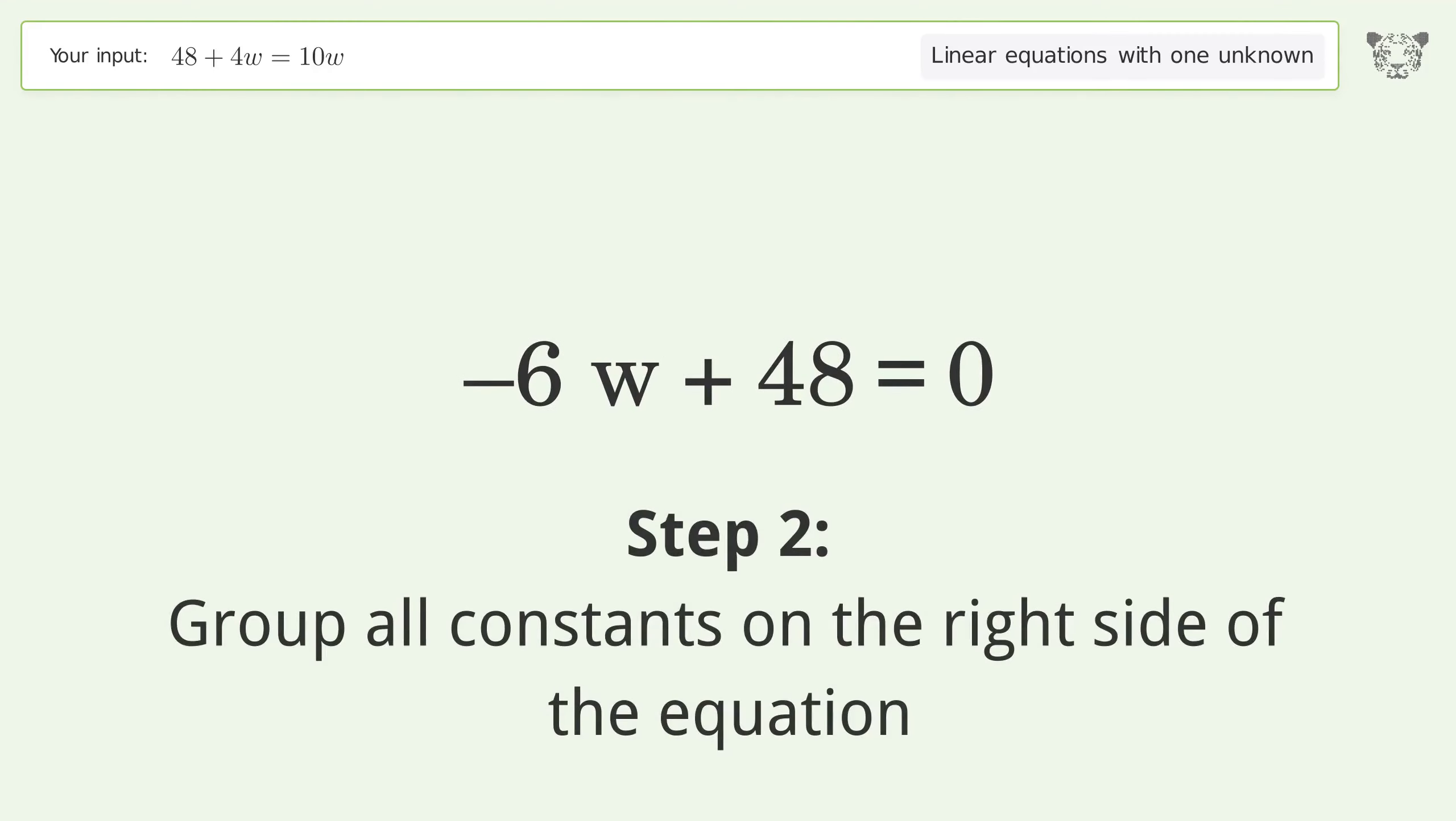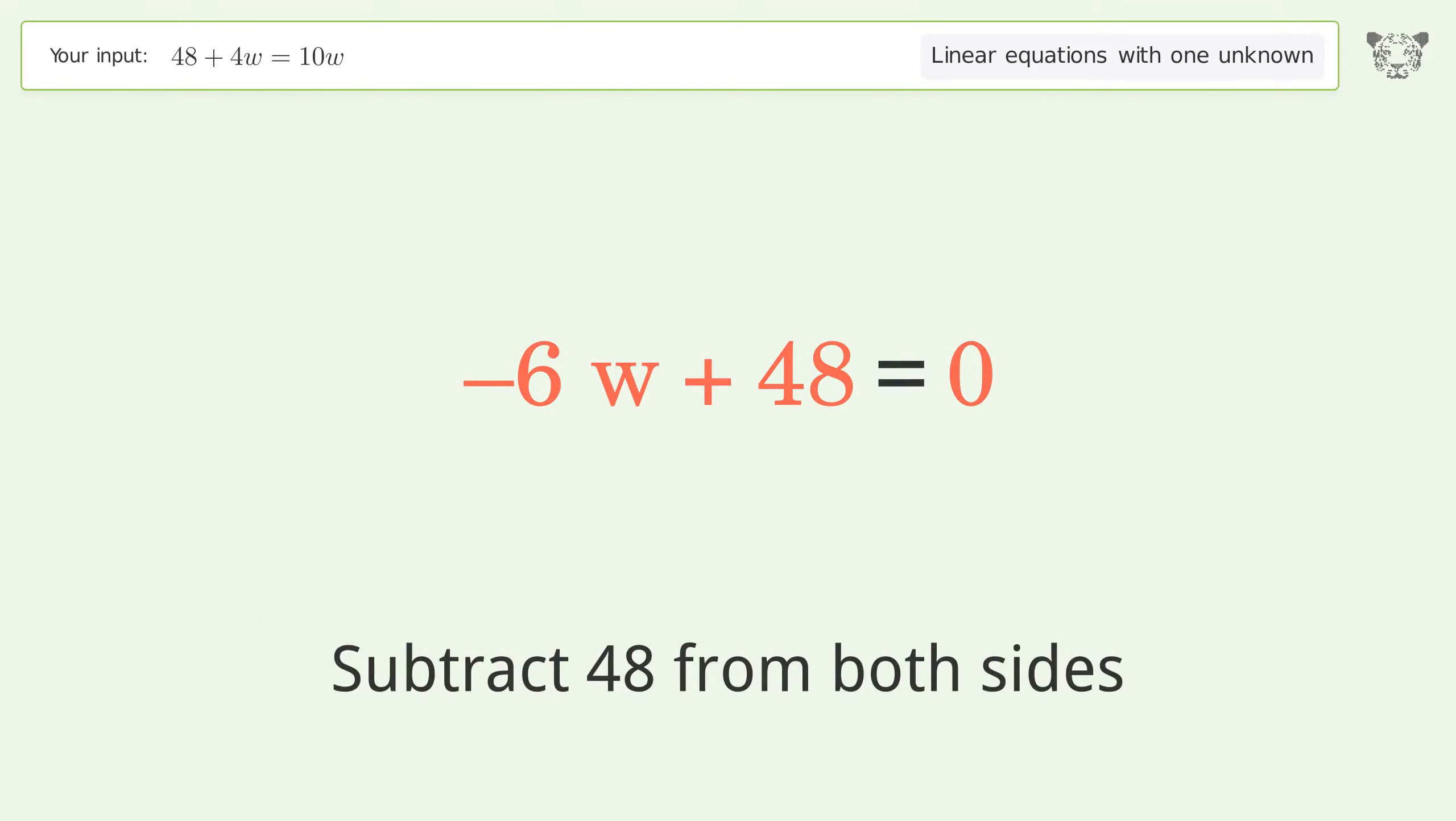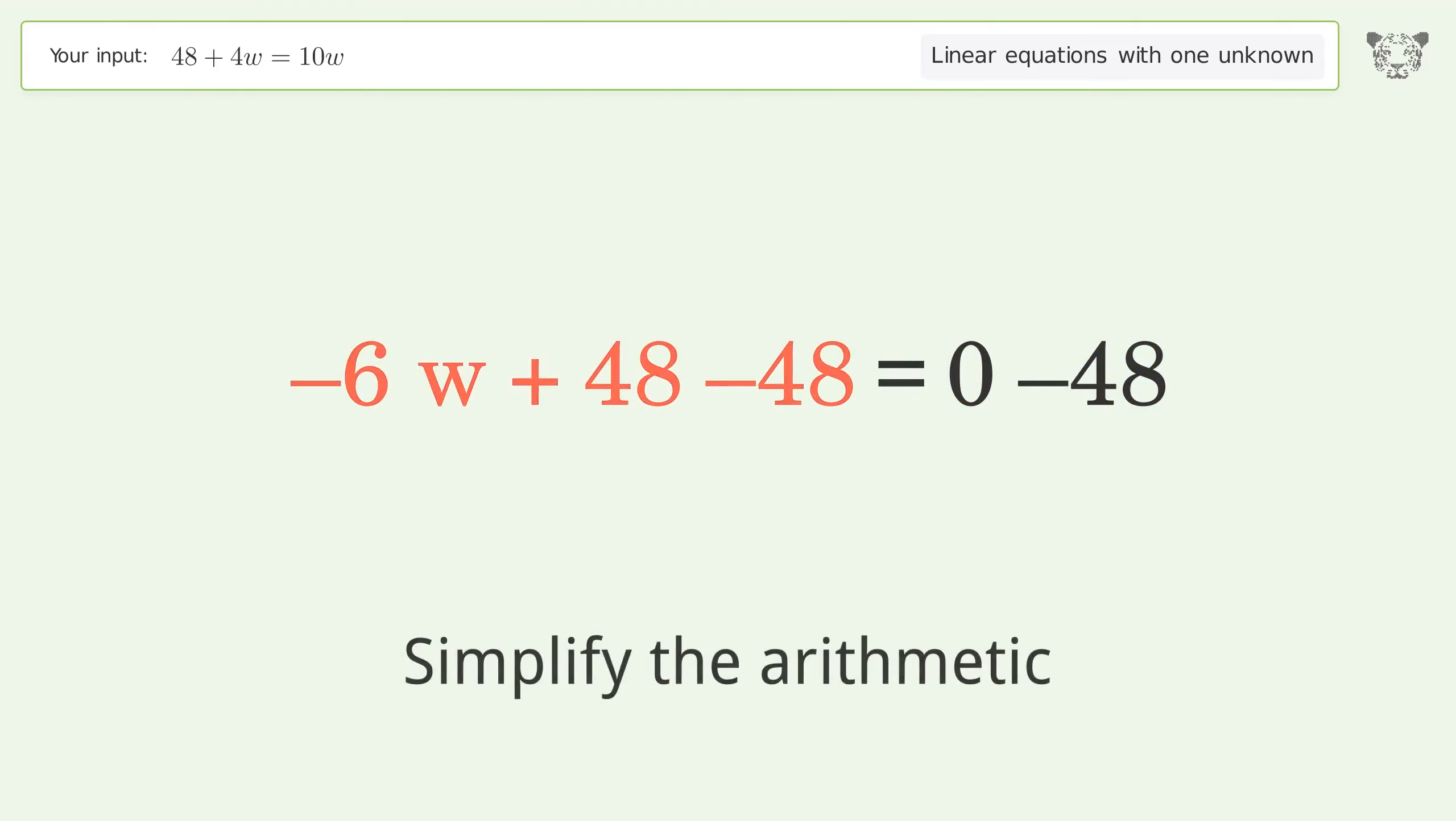Group all constants on the right side of the equation. Subtract 48 from both sides, then simplify the arithmetic.